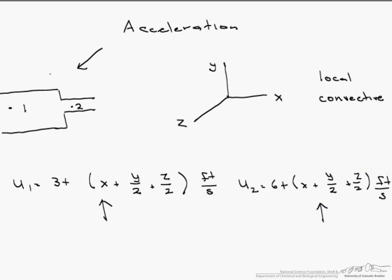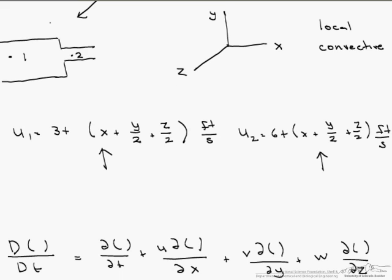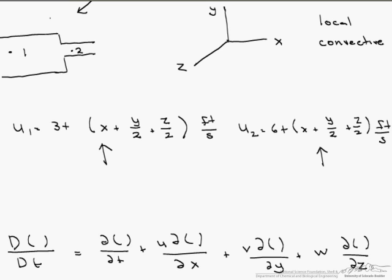In order to find the acceleration, we are going to use what is known as the material or substantial derivative. The material derivative consists of this local part which is dependent on time, as well as this convective part which is dependent on position.